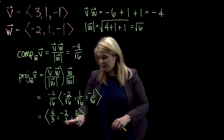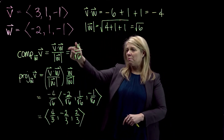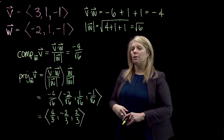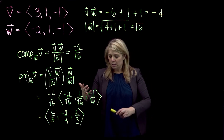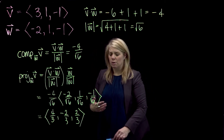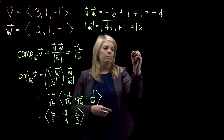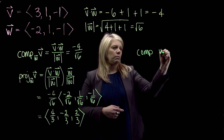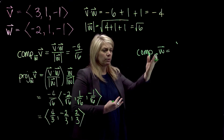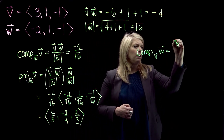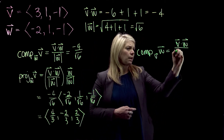This vector (4/3, -2/3, 2/3) represents how much of V is along W. Since we got a negative for the component of V along W, this projection vector points in the direction opposite to W. We're also going to calculate the component of W along V using a similar formula — V dot W divided by the magnitude of V, since the dot product is commutative.